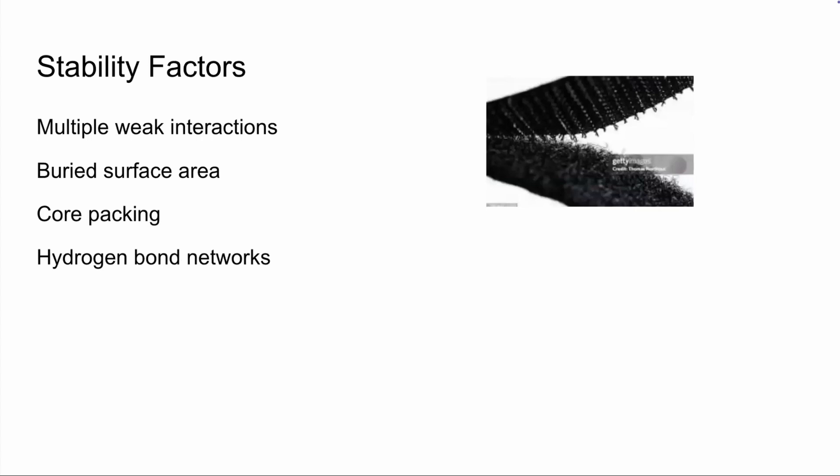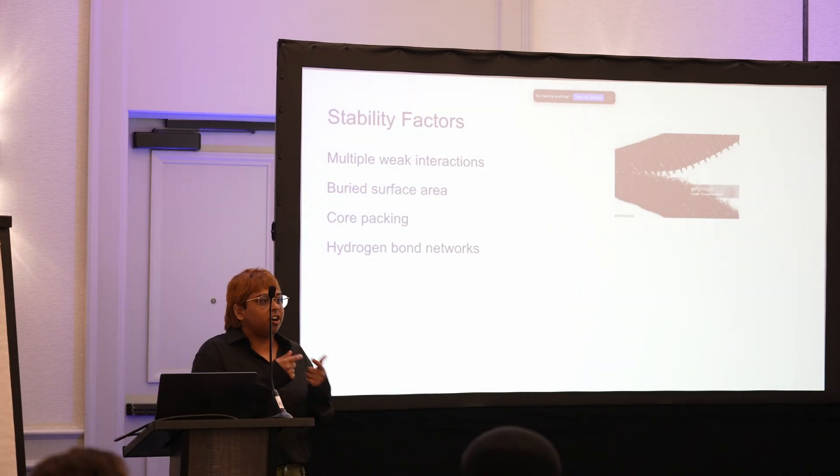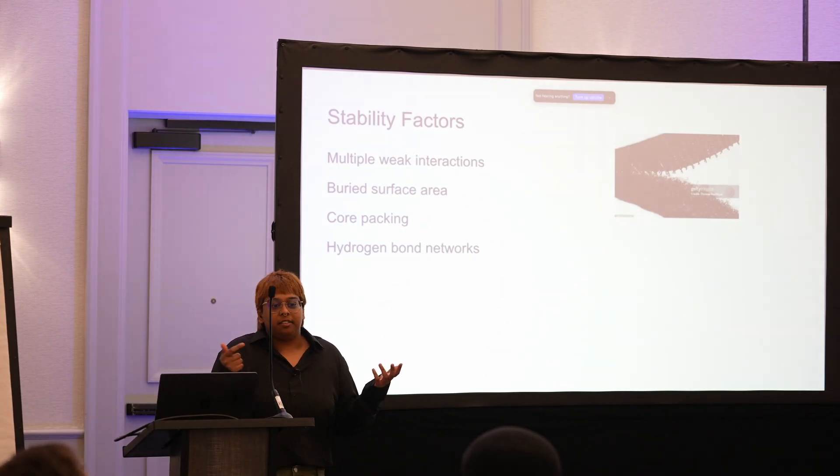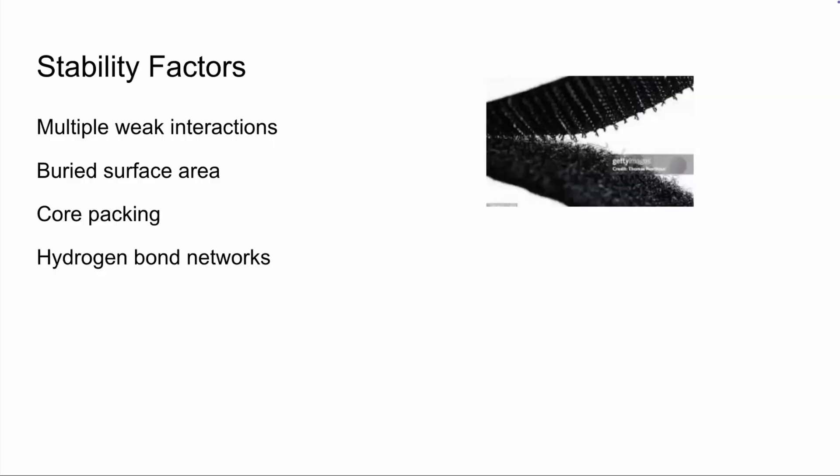And then we also want to think about stability here. So proteins achieve stability by cooperation through multiple different factors. Even though the individual interactions aren't actually that much energy, altogether, they're creating this strong and specific binding. So I think about it as like Velcro. Like one of those little Velcro hooks isn't going to do anything. But when you put them all together, it's a really stable and strong interface.